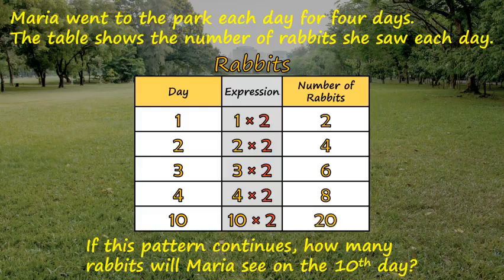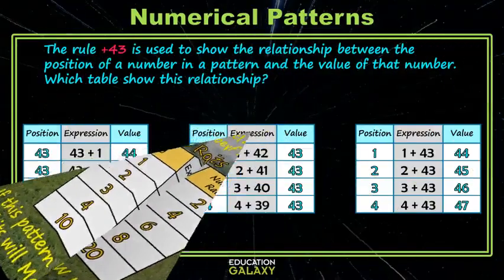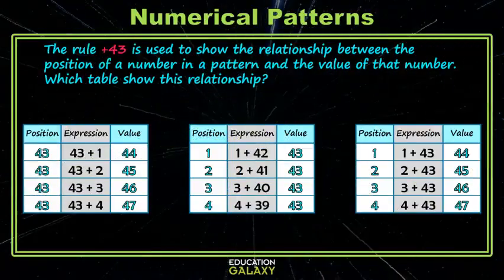Now that you've had some pattern practice, let's try an example. Here we're given the rule, and that is plus 43. It's used to show the relationship between the position of the number and the value, and we want to know which table shows this relationship.